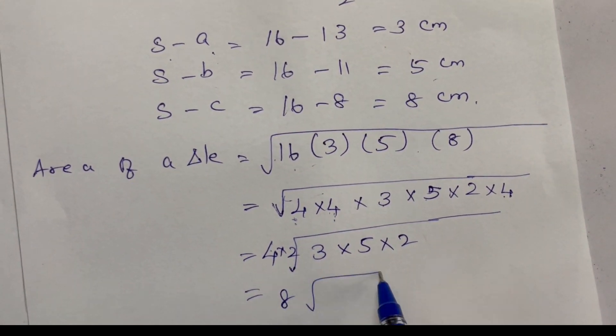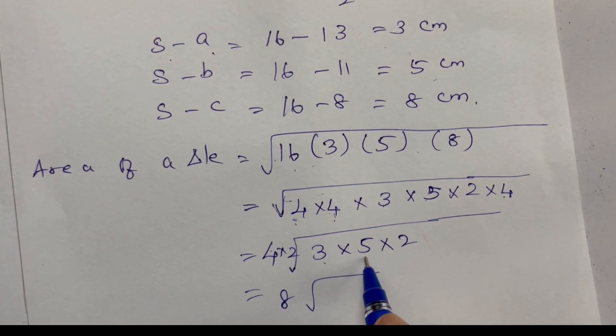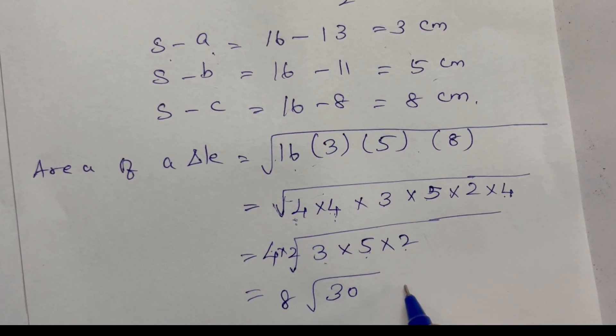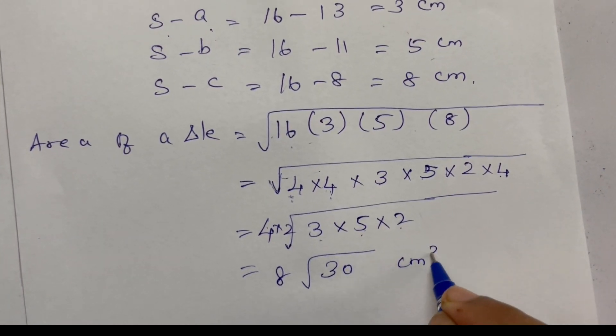8, 3, 5's are 15. 15, 2's are 30 cm squared area.